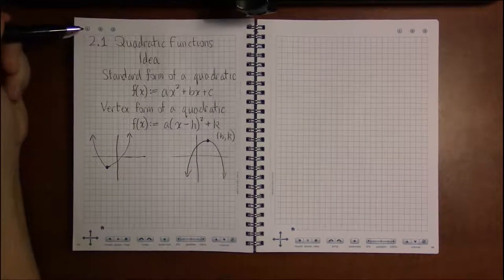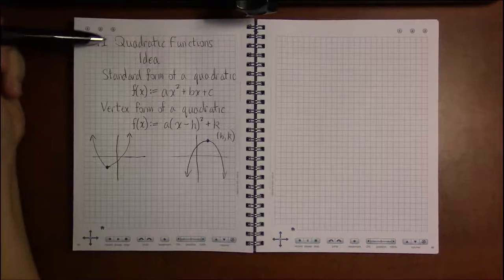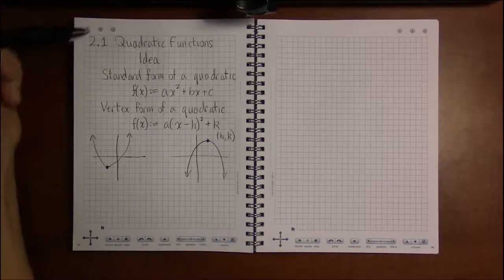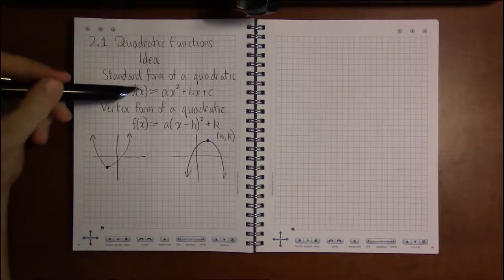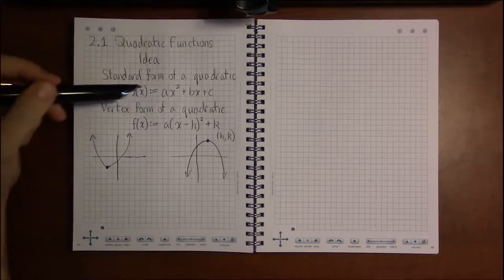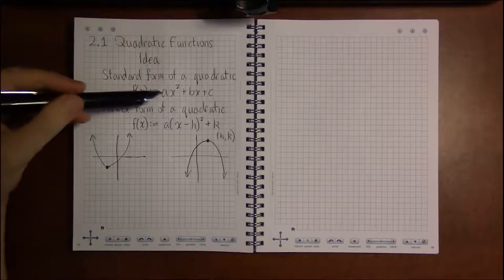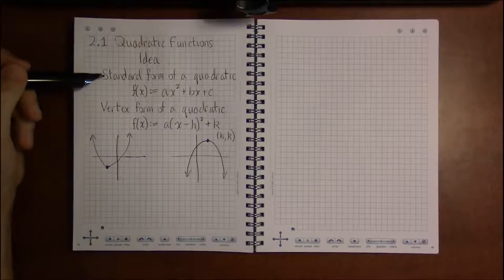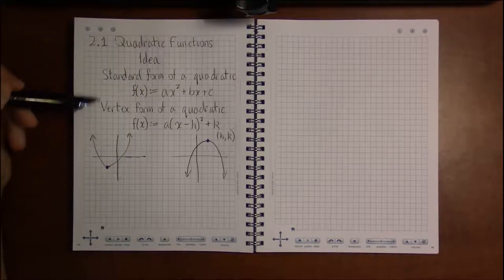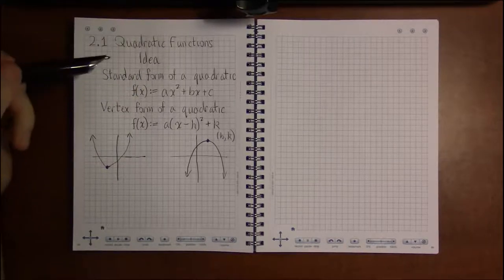We're here in Section 2.1 talking about quadratic functions. In equation form, quadratics come in two varieties. We saw that lines came in a number of different forms, and quadratics generally come in two different types of forms.